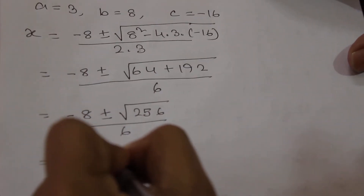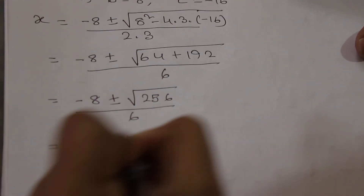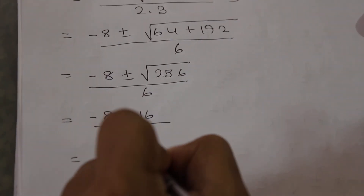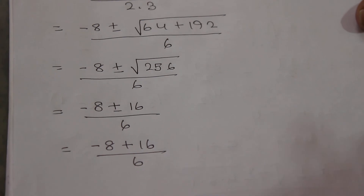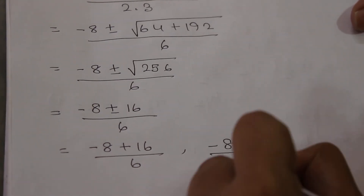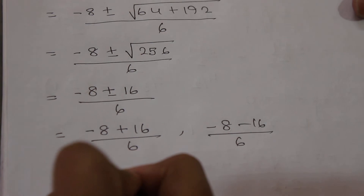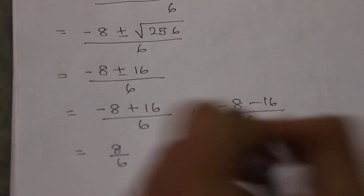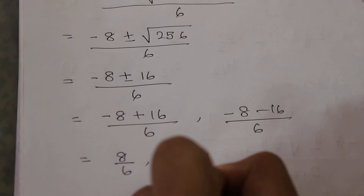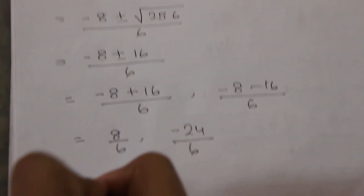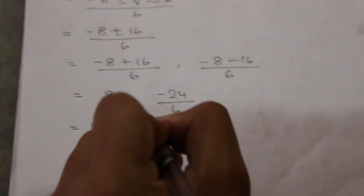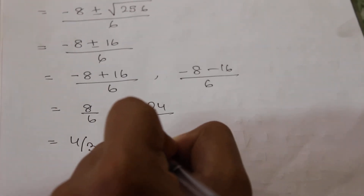So (−8 ± 16) / 6. One root will be (−8+16)/6 = 8/6 = 4/3, and another root will be (−8−16)/6 = −24/6 = −4. So one root is 4/3 and another root is −4.